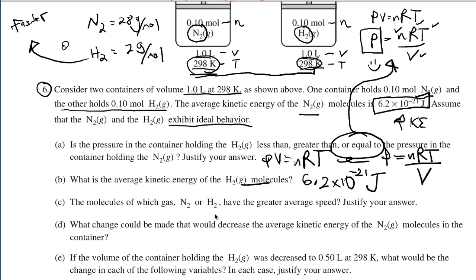The molecules of which gas, N2 or H2, have a greater average speed? We were able to solve all of this just by looking at this diagram and identifying H2, because it has a smaller molar mass, and its speed is actually greater by a factor of the square root of the differences in mass.